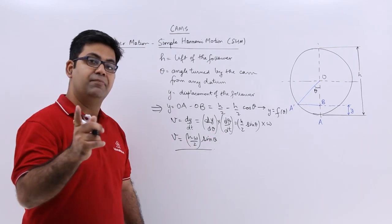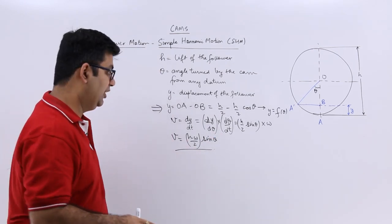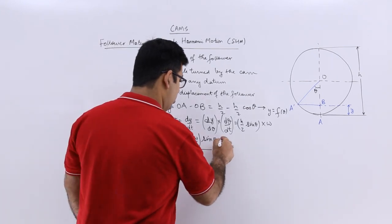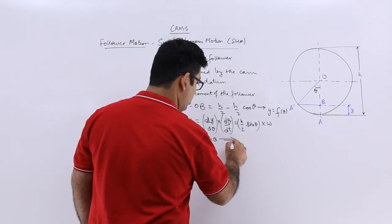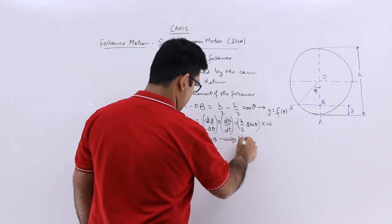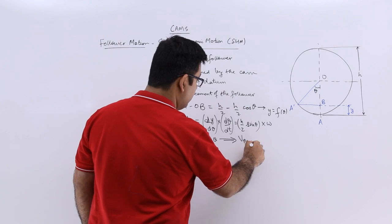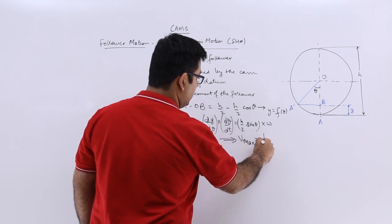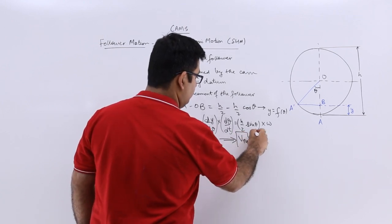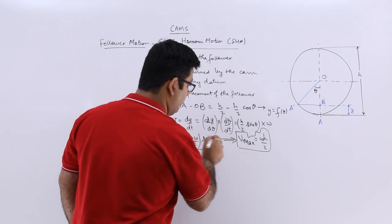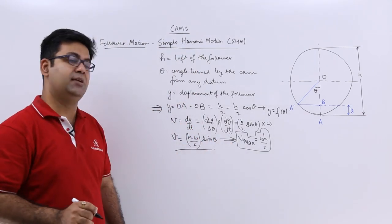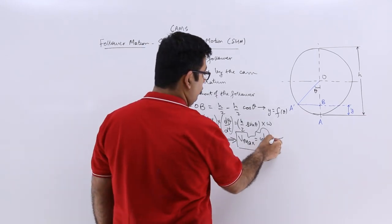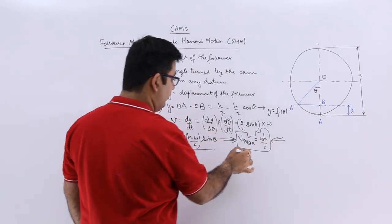So the value of the velocity, or the linear velocity of the follower, will be equal to h omega by 2 into sin theta. If I have to find out the maximum velocity, sin theta has to be 1, so v max becomes omega h upon 2. Make a note of this.